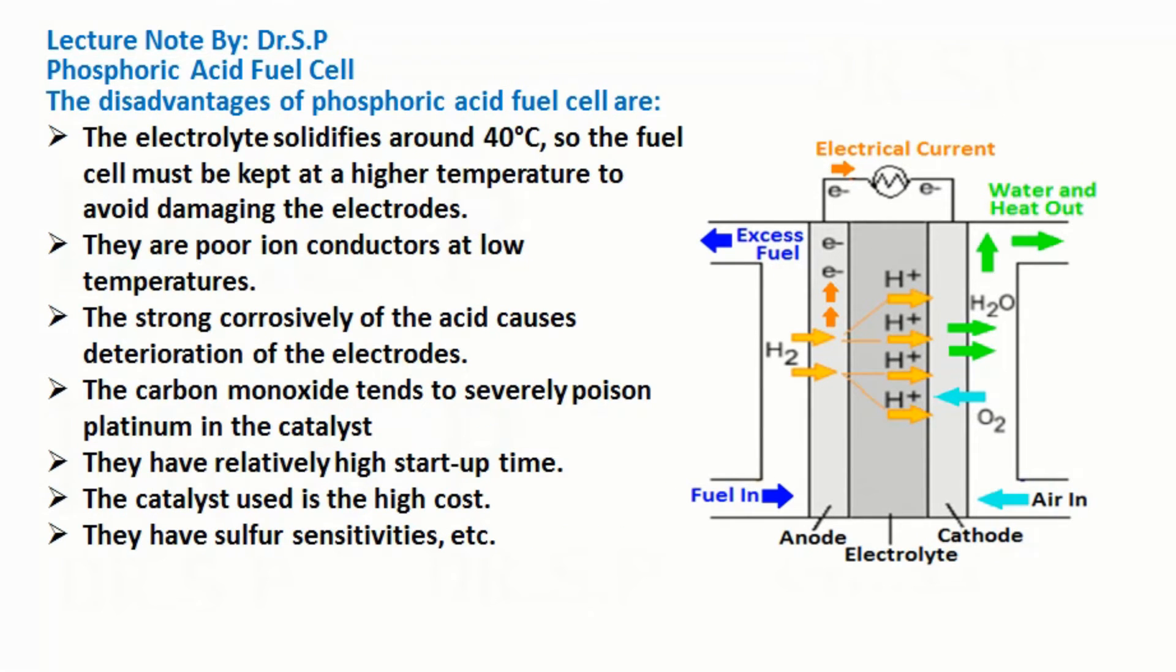The disadvantages of Phosphoric Acid Fuel Cell are: the electrolyte solidifies around 40 degrees Celsius, so the fuel cell must be kept at a higher temperature to avoid damaging the electrodes. They are poor ion conductors at low temperatures. The strong corrosively of the acid causes deterioration of the electrodes.